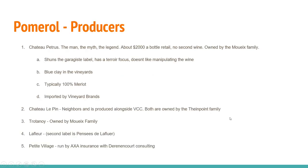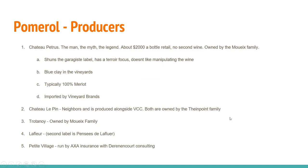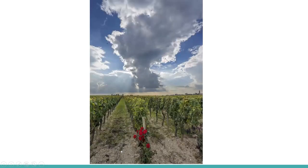Great Pomerol producers — starting with Petrus, about $2,000 a bottle retail. No second wine. Owned by the Moueix family, who shun the Garagiste label and have more of a terroir focus. They don't like manipulating the wine and have blue clay in the vineyards. Typically 100% Merlot. Château Le Pin neighbors and is produced alongside Vieux Château Certan, both owned by the Thienponts. Trotanoy is owned by the Moueix family. La Fleur, with second label La Pensée de La Fleur — quite a value. Petit Village is run by AXA Insurance with Garencourt Consulting.